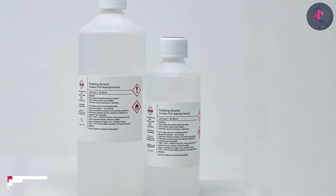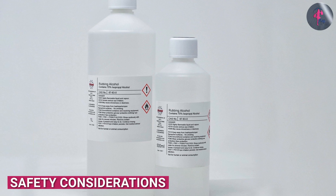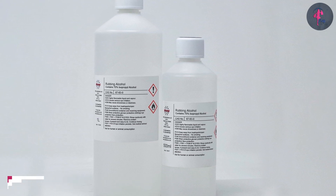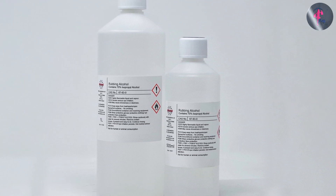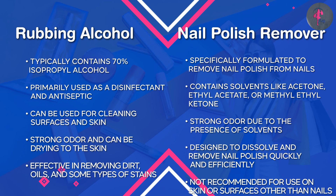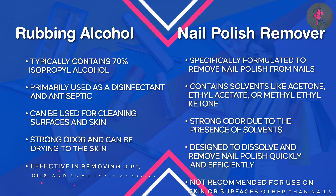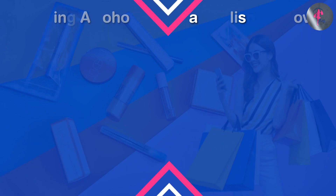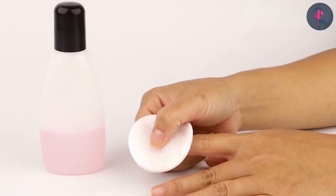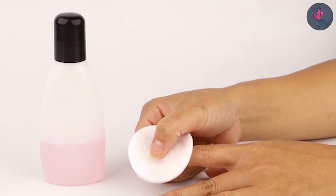When using either rubbing alcohol or nail polish remover, it is important to follow proper safety precautions. This includes wearing gloves or protective clothing, using in a well-ventilated area, and avoiding contact with eyes, nose, or mouth. It is also important to keep these products out of reach of children and pets, as they can be harmful if ingested.